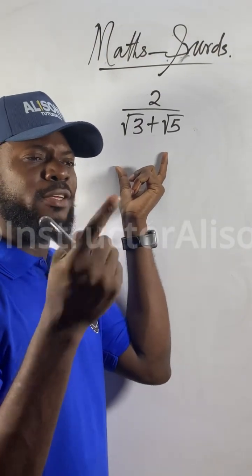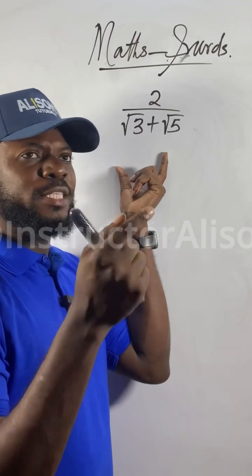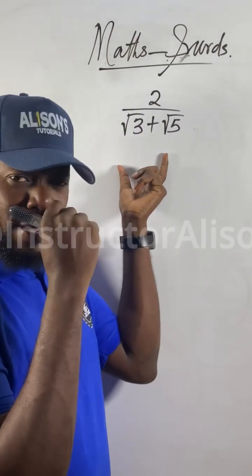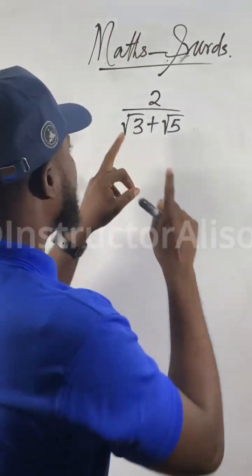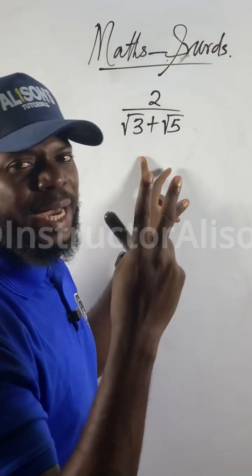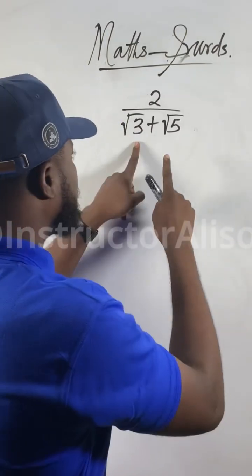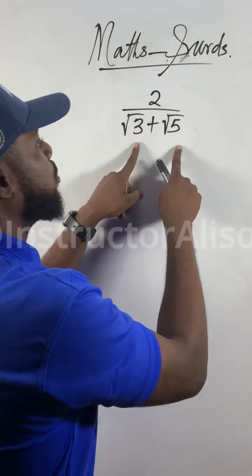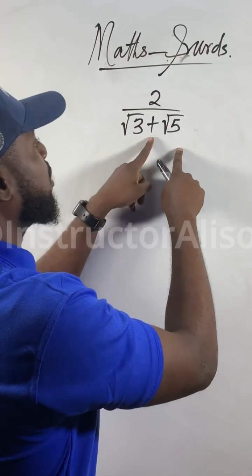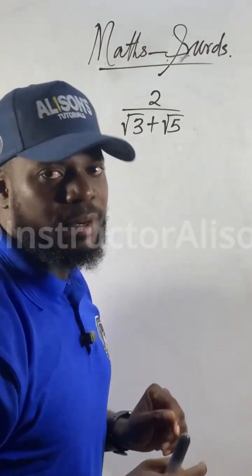Let me make you rationalize the conjugate of the binomial sort. Why the binomial sort? Because binomial means a two-term expression — binomial, two terms expression. See first term, see second term, whether a plus or whether a minus. Two terms are binomial.